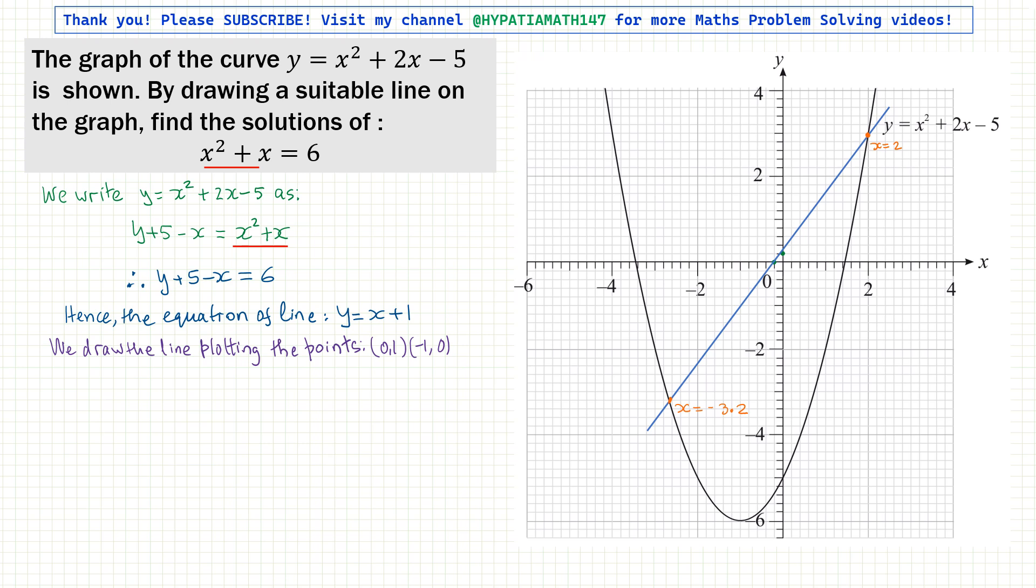It's because I've drawn it on a computer, so there is an error. But x equals 2 is the correct answer. So I will say whatever I have, I'll give that as the answer. Reading from the graph, the solution is x equals 2 and x equals minus 3.2.